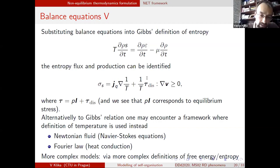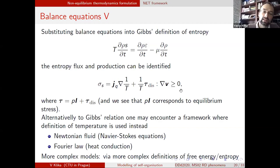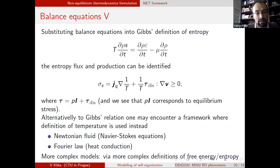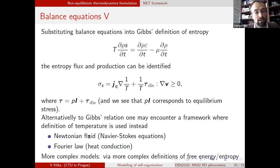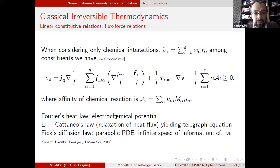In this simple setting, entropy production has two terms: the flux of heat times the gradient of inverse temperature, and the dissipative part of the Cauchy stress times the gradient of velocity. The easiest way to satisfy the non-negativity inequality is to assume that heat flux is proportional to the gradient of inverse temperature — that's exactly Fourier's law. For the second term, we get exactly a Newtonian fluid.